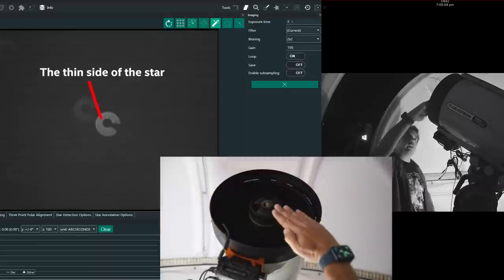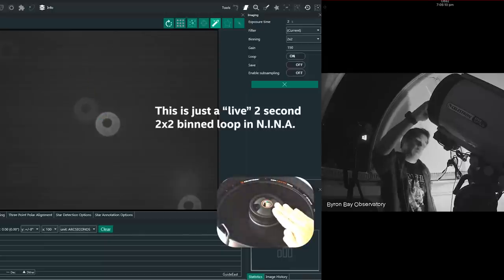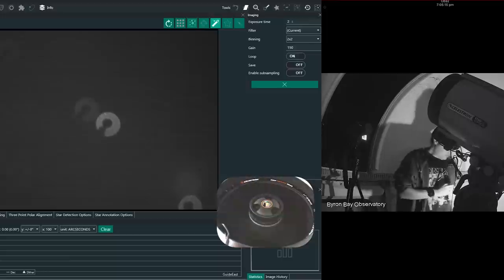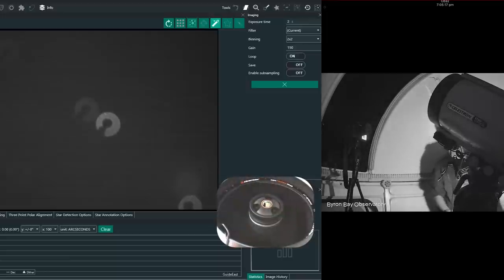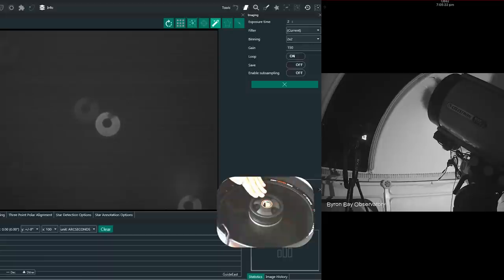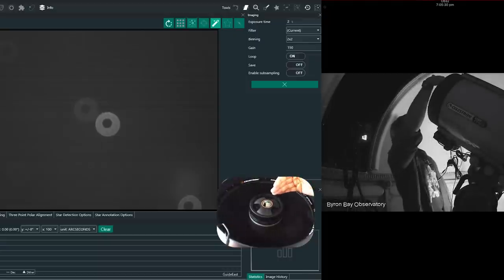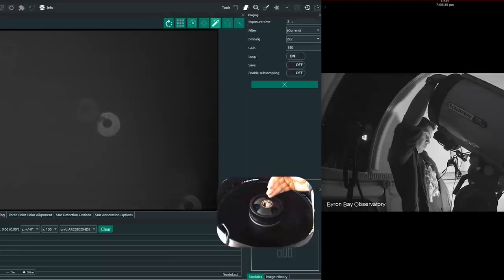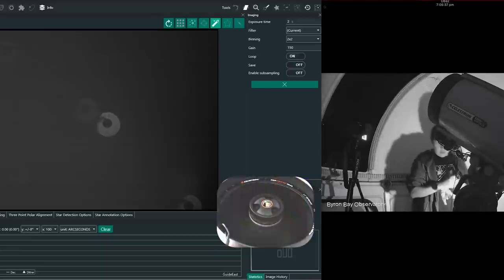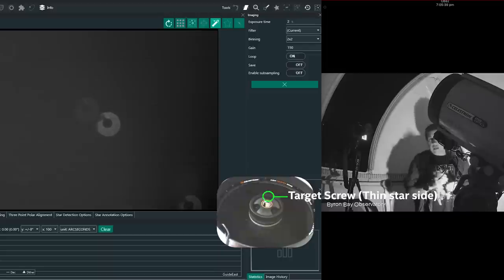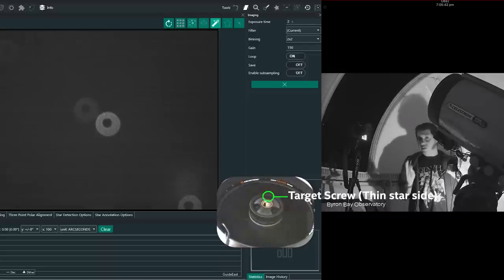So let's try this one over here. Closer. I'm looking for the thin section of the star. I'm going between two screws now. Yeah, sort of up this way. I think we are looking at this screw over here. Yep. So this is the first screw we're going to adjust.